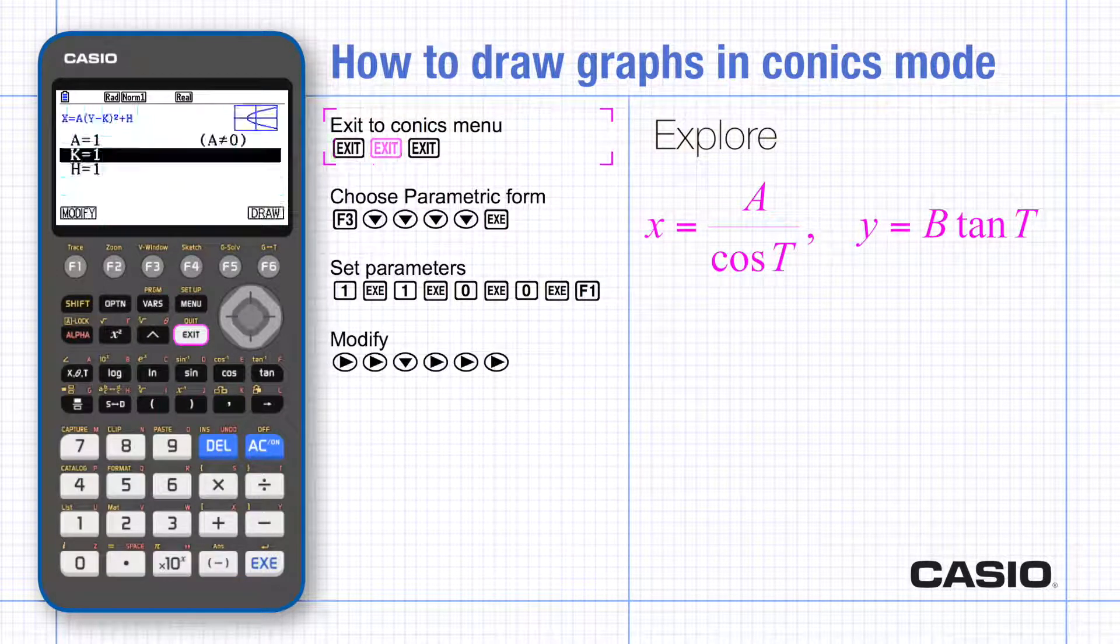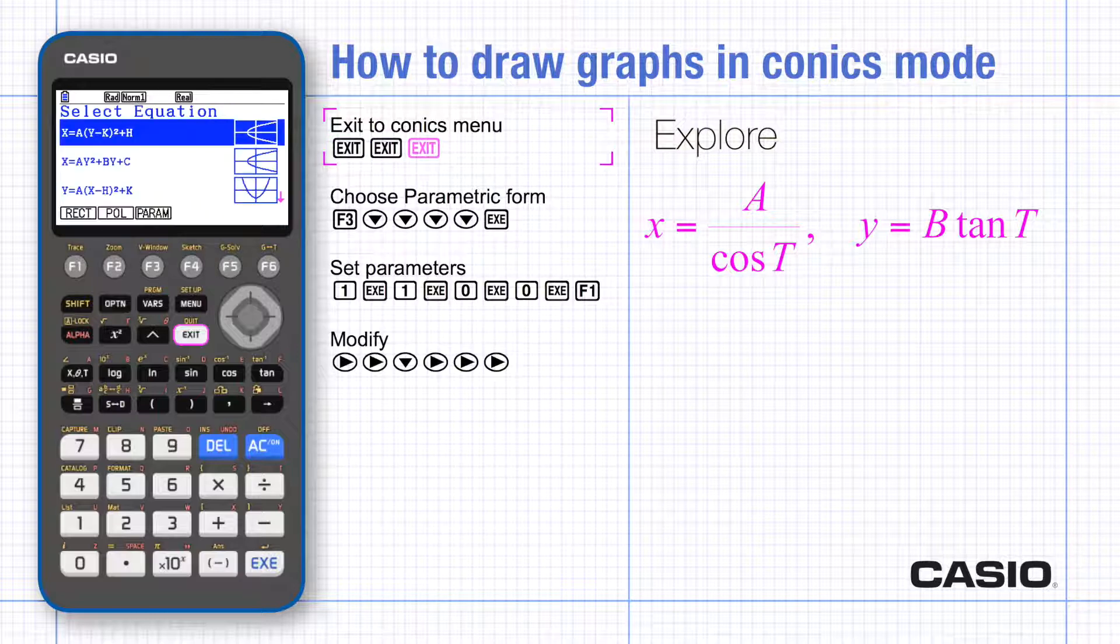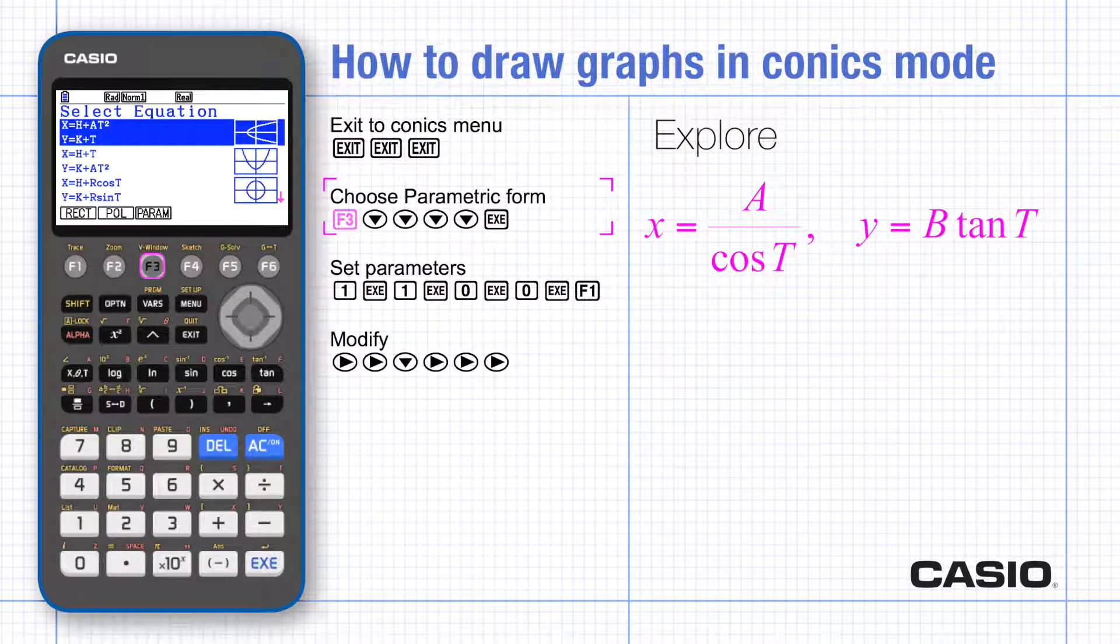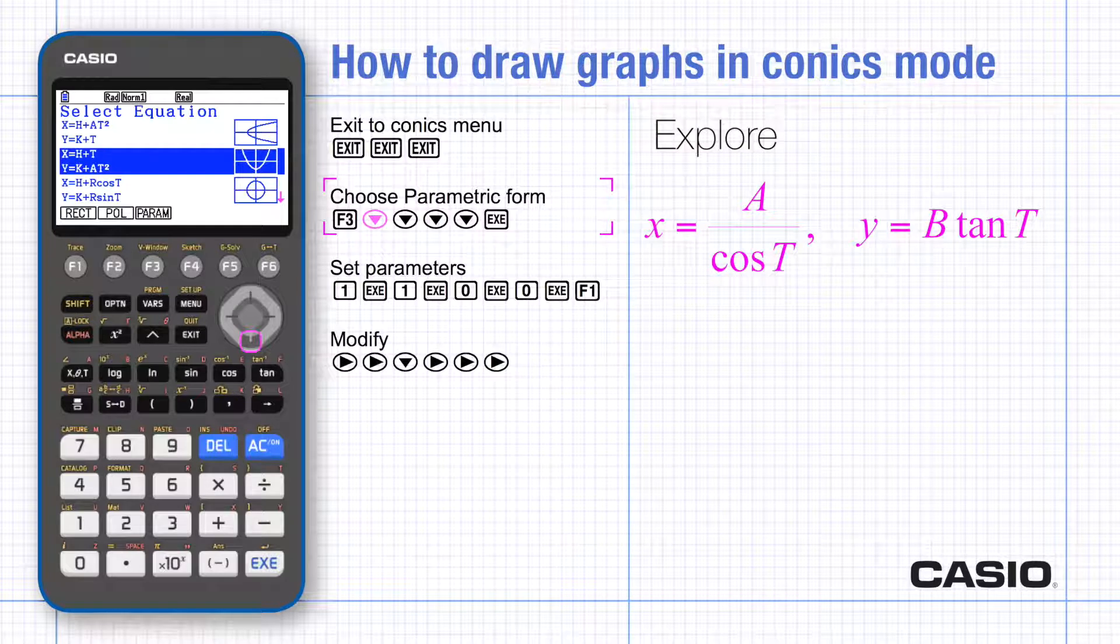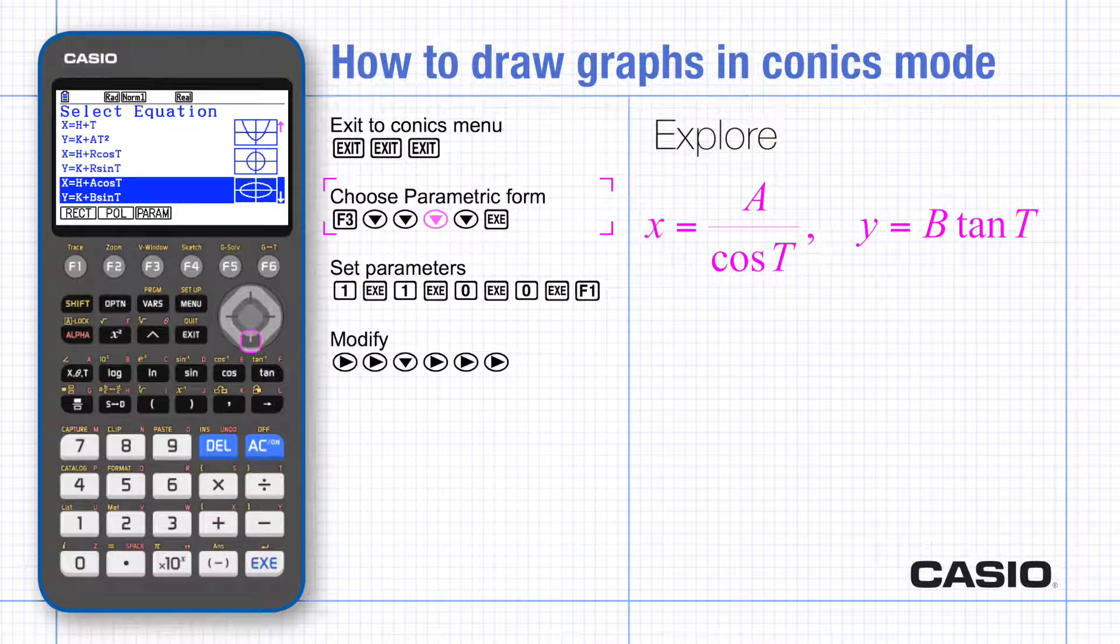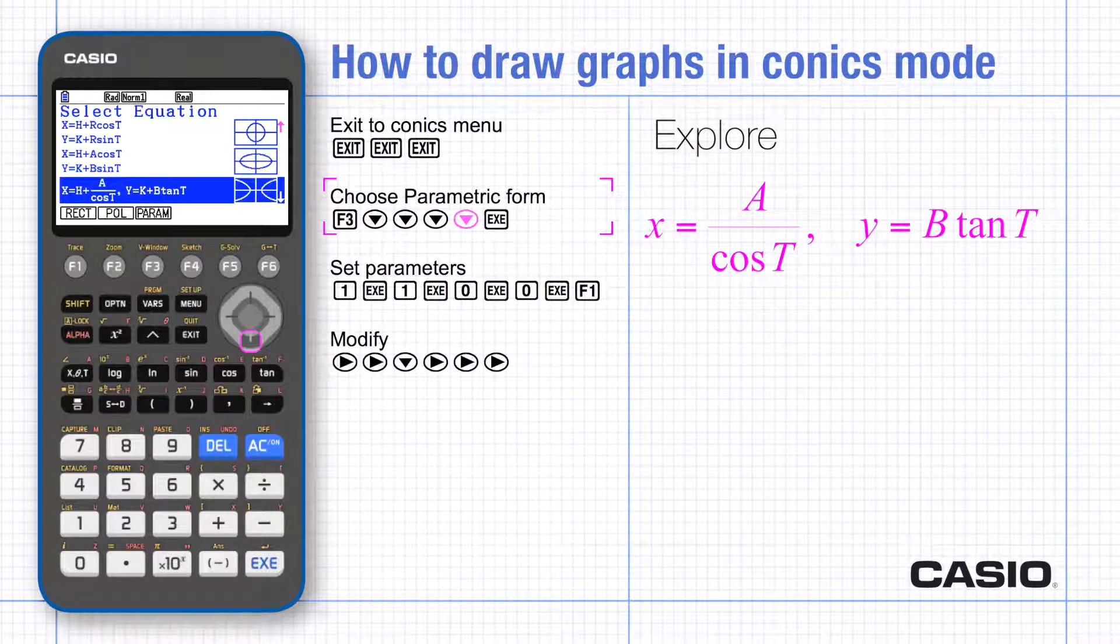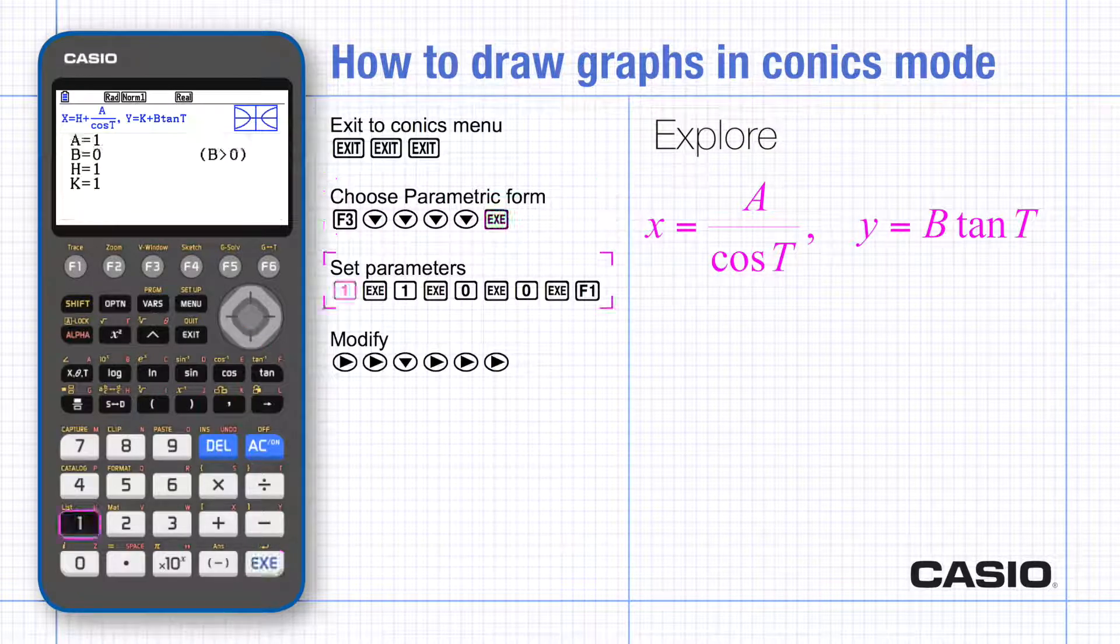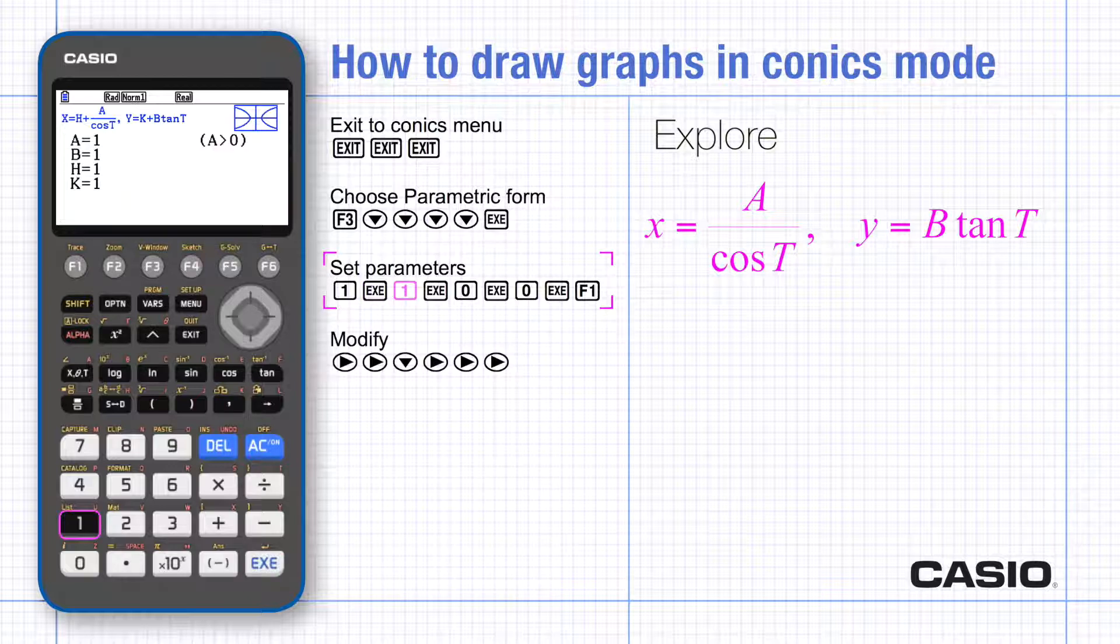So go back to the main conics menu, choose parametric form, and scroll down to choose hyperbola. Set a and b to 1 initially, and h and k to 0.